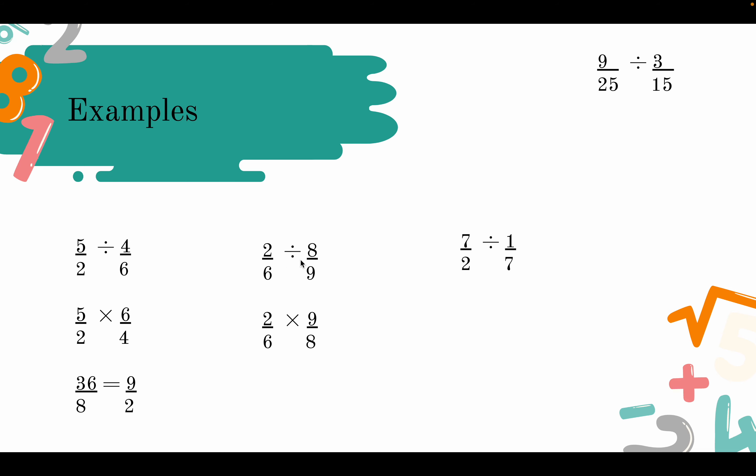Next, we have 2 over 6 divided by 8 over 9, which can be changed to 2 over 6 times 9 over 8. Remember, we're keeping the first, changing the symbol, and flipping the last. And so we get 18 over 48, which can be simplified to 3 over 8.